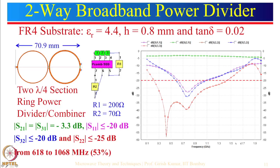For S11 < minus 20 dB, the isolation is actually even broader than S11. S32 is less than minus 20 dB and S22 is less than minus 25 dB over the entire range. This design covers from 618 to 1068 MHz. The percentage bandwidth — calculated as bandwidth divided by center frequency times 100 — comes out to 53 percent.